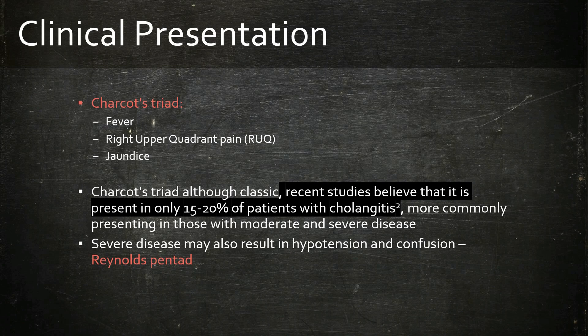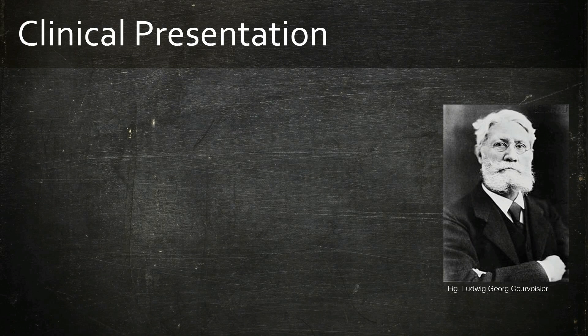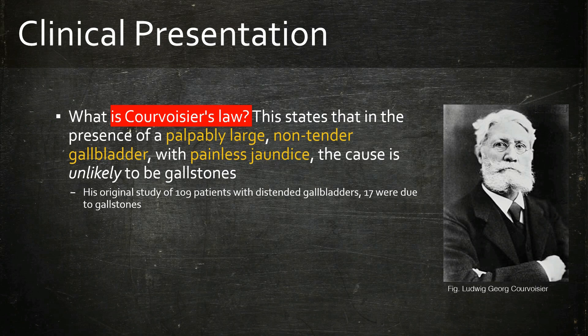A quick note on Courvoisier's Law: this states that if the gallbladder is palpably large, non-tender, with painless jaundice, the cause is unlikely to be gallstones and points more towards malignancy of the biliary or pancreatic system.